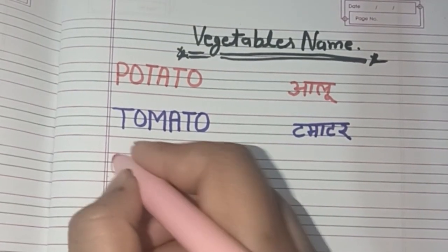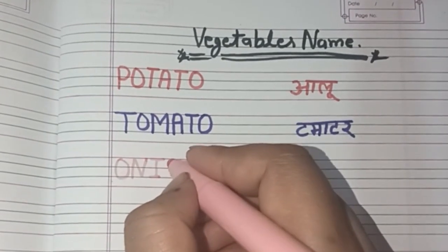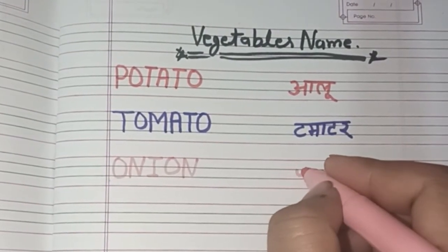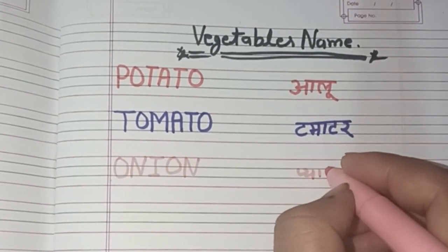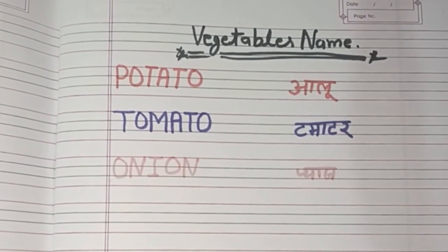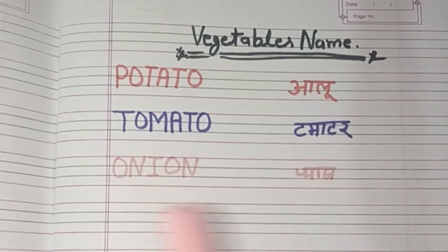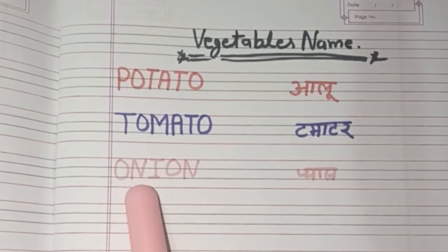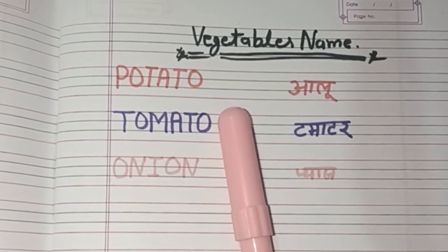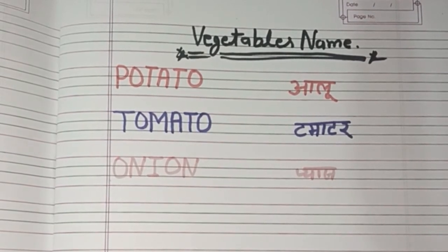O-N-I-O-N. Onion! Onion means Piyaj. O-N-I-O-N, Onion, Onion means Piyaj. Pink color — pink color!